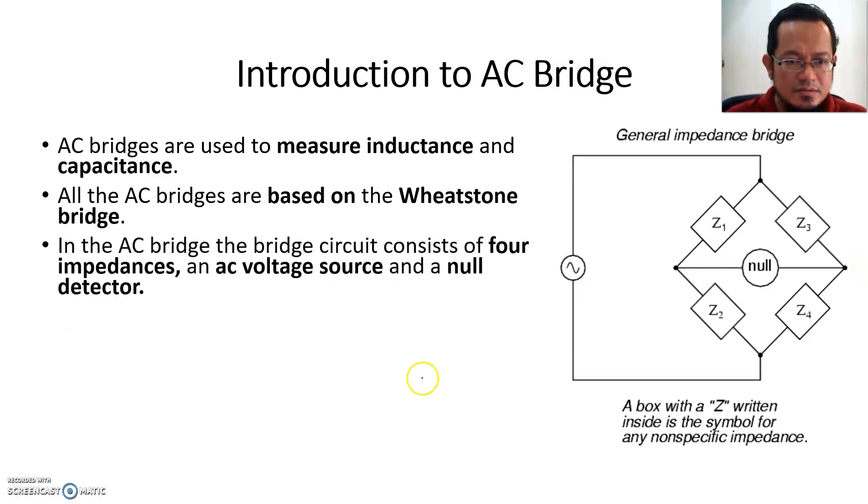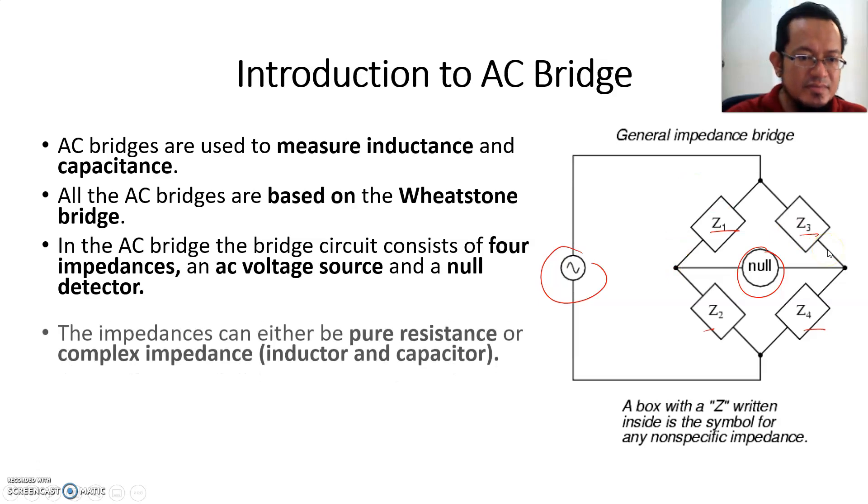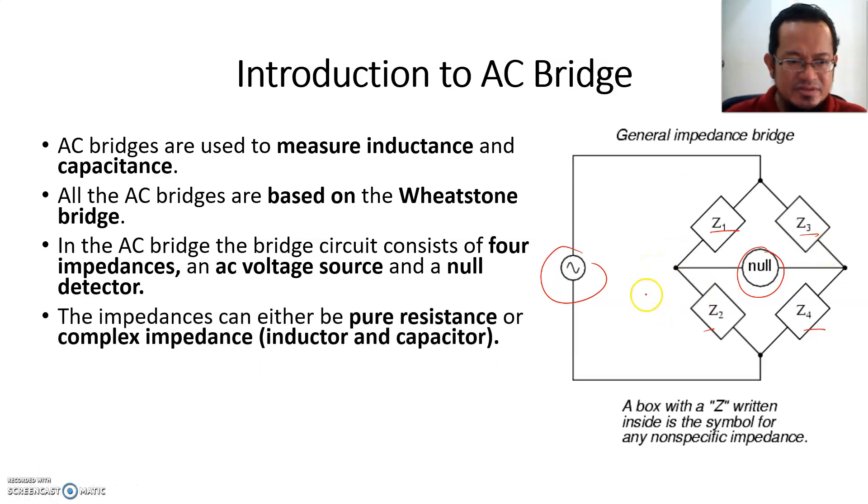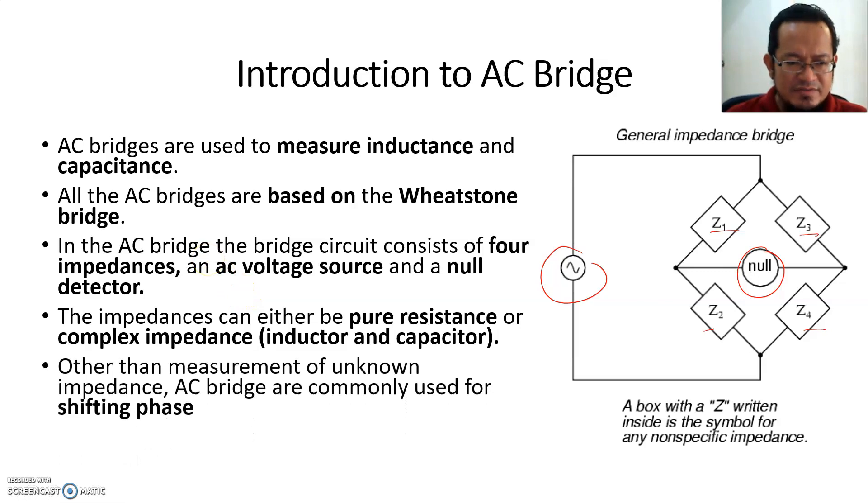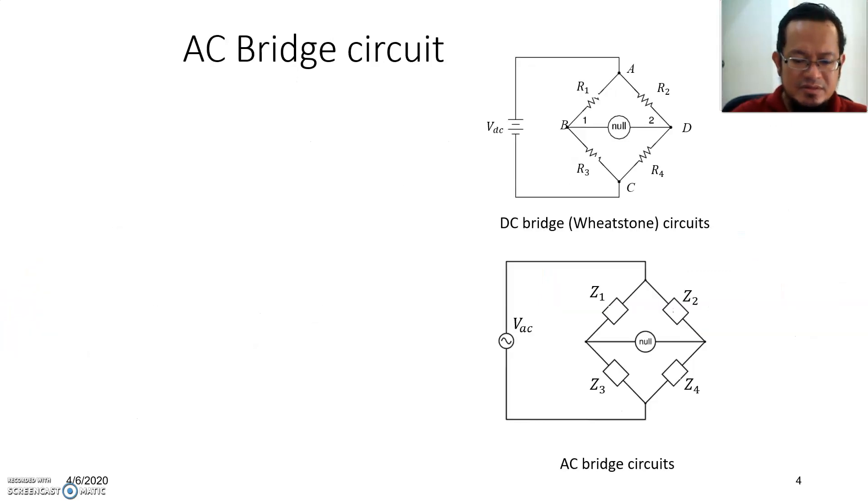In AC bridge, the bridge circuit consists of four impedances and an AC voltage source. As you can see, one, two, three, and four impedances, one AC voltage source, and a null detector here. All the connections are pretty much the same as a Wheatstone bridge. The impedance can either be pure resistance or a complex impedance when it includes inductor and capacitor. Other than measurement of unknown impedance, AC bridges are also commonly used for shifting phases.